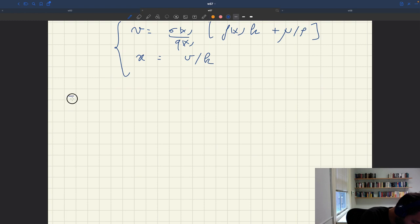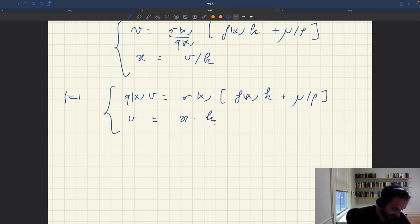Notice a few things. Q(X) times V—Q(X) the buying probability, V is the number of visits—so this is output, Q(X) times V here. So we can write this as Y equals sigma X times F(X)K plus mu over P. Here I have V. What I can do is multiply here by Q(X), and Q(X) times V we said was Y. And Q(X) times X, we know that's F(X), that's F(X)K.